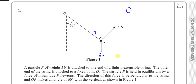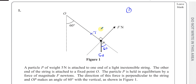Instead of resolving the forces horizontally and vertically, I'm going to resolve them parallel to the force F and parallel to the force T — resolving the 5N force in those two directions. This angle here must be 60 degrees because of corresponding angles. Then, since this must also be 60, this is 30 degrees, and it must be 90 degrees here. So this is 60 degrees and this is 30 degrees.